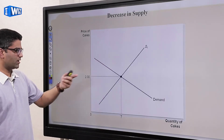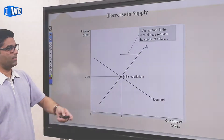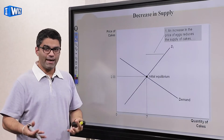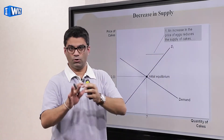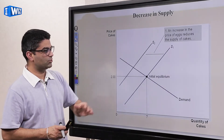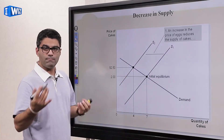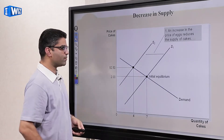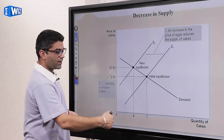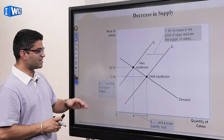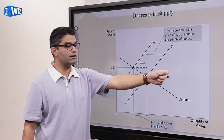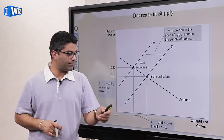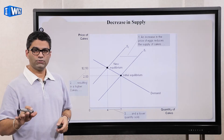Now let's look at an example with a decrease in supply. Starting from the same equilibrium point — if the price of eggs increases, and eggs are an ingredient in making cakes, then the price of an input has gone up, which reduces the supply of cakes. The supply curve shifts leftward. The new equilibrium price rises to $2.50, but now fewer cakes are being produced and sold. Don't try to intuitively guess — just follow the graph, and it will always give you the right answer.